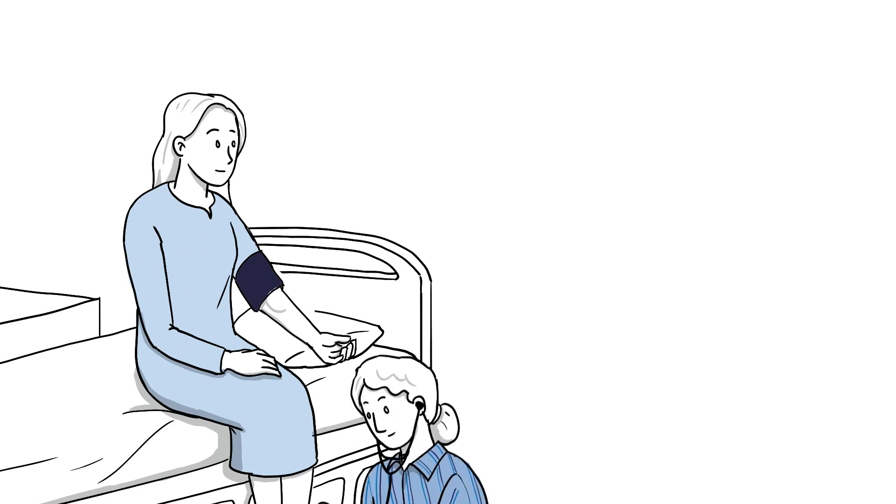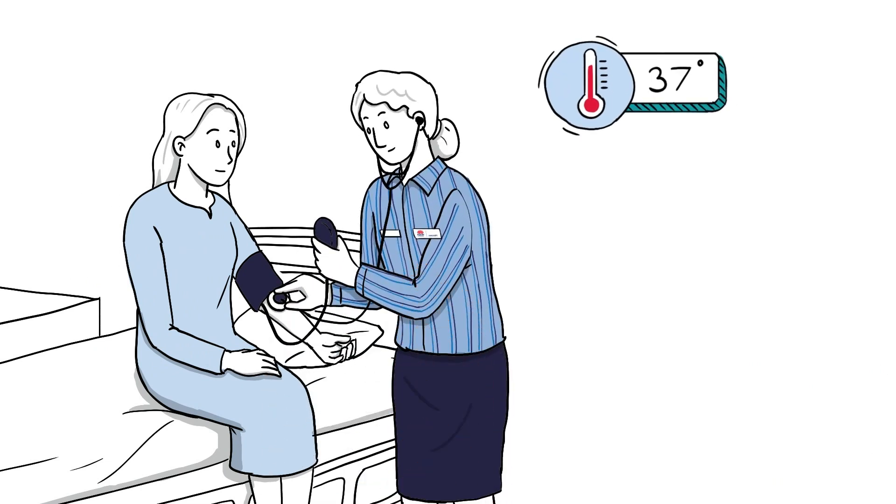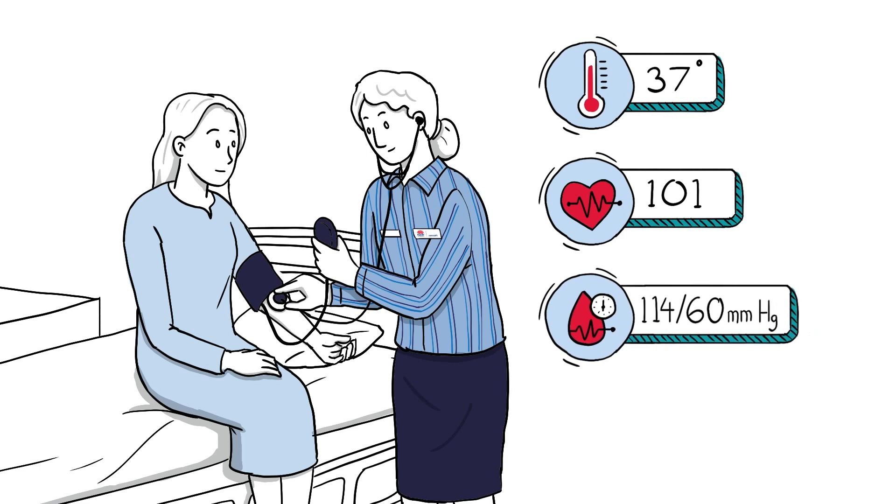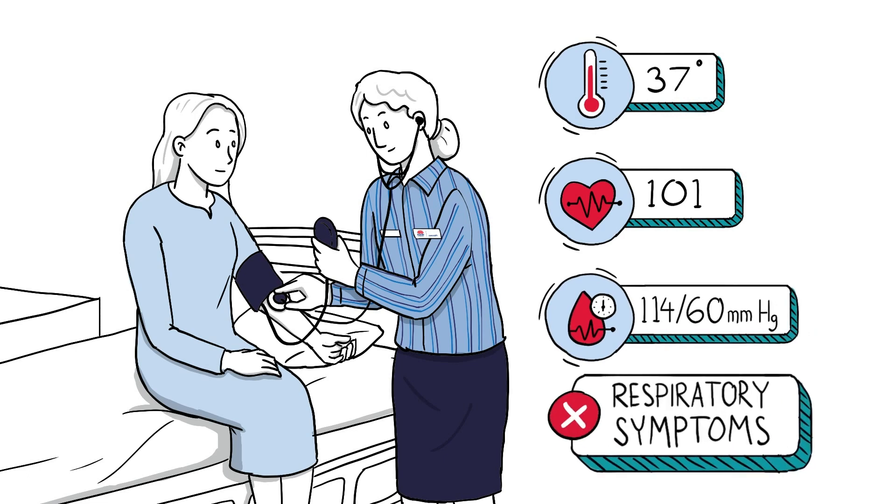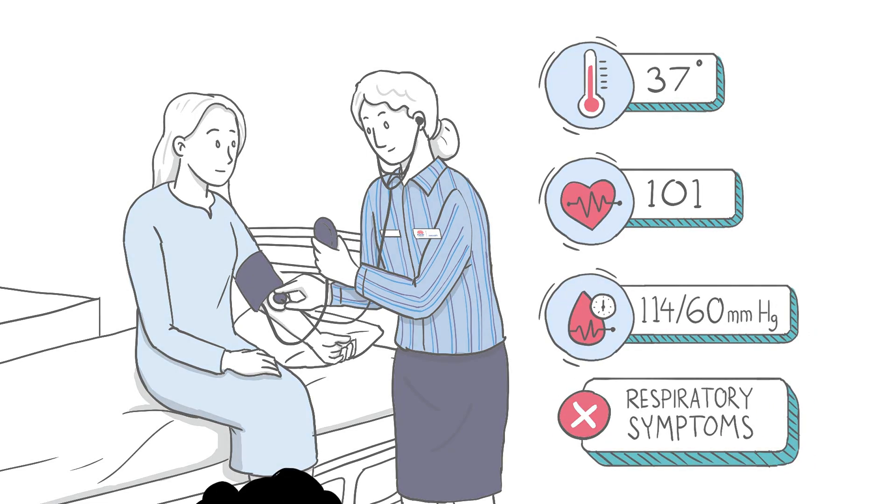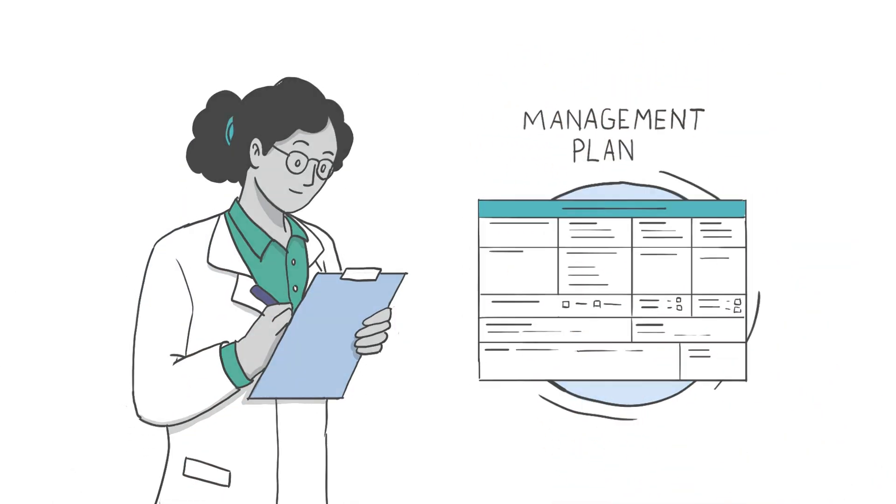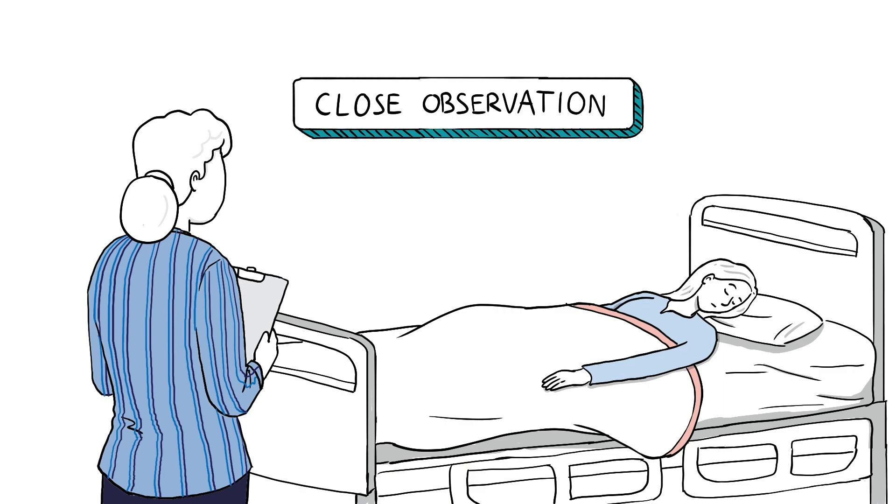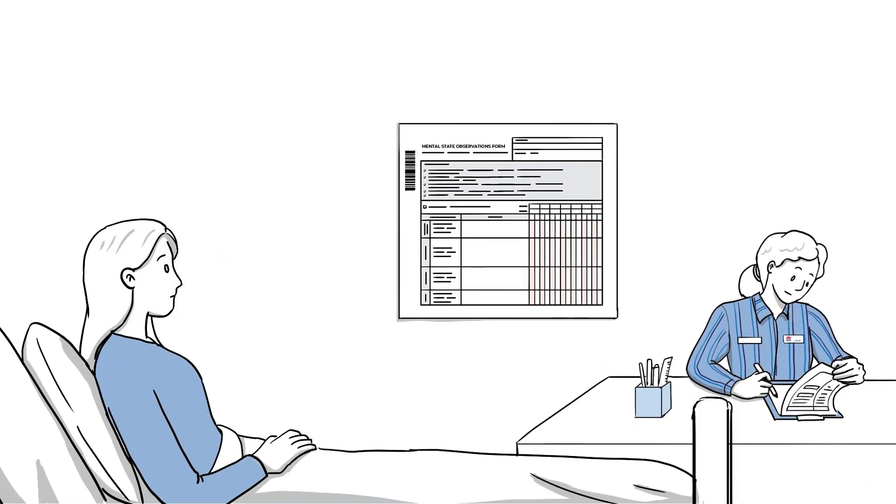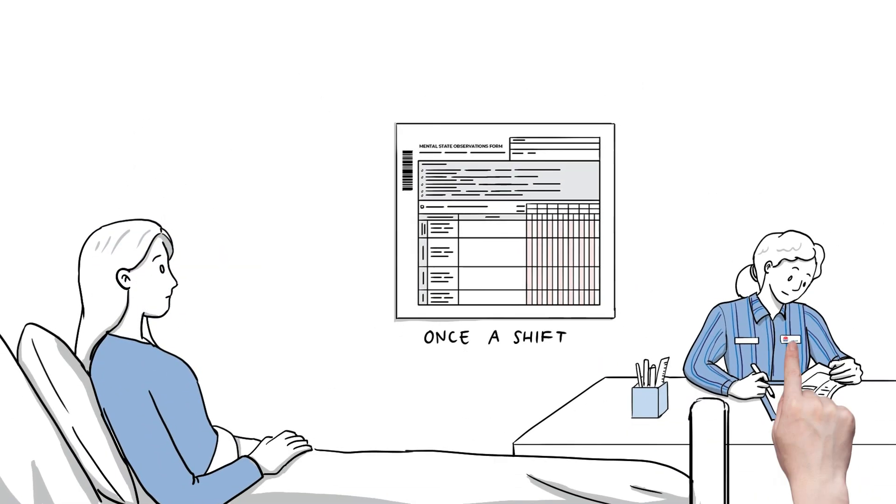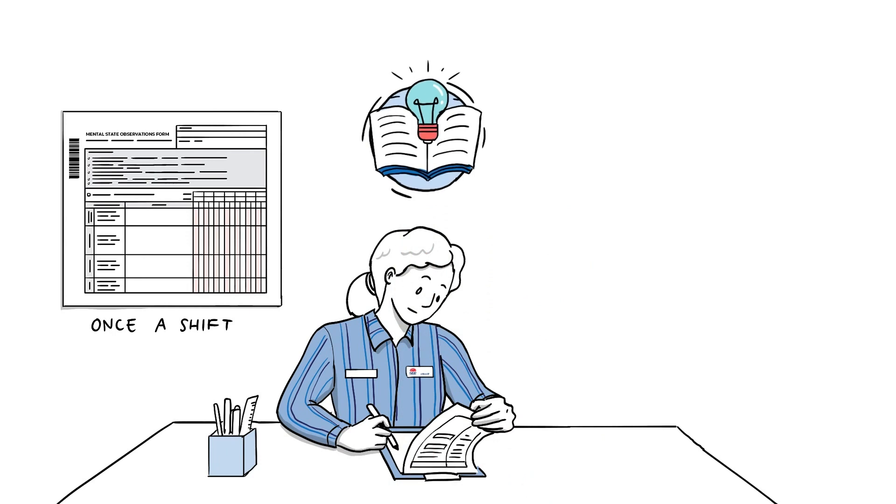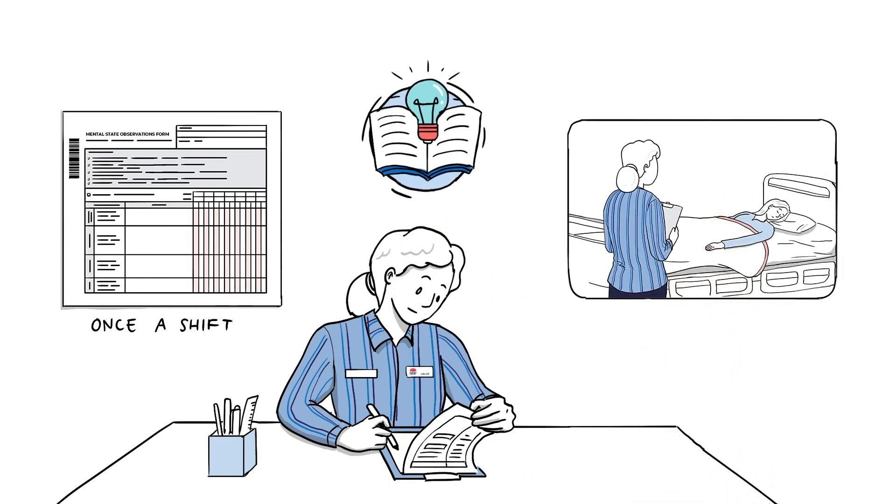A clinical review for Joe reveals a temperature of 37, pulse 101, blood pressure 114 over 60 and no concerning respiratory symptoms. Following the clinical review, the doctor documents a management plan, including for close observation. Nurses complete the mental state observation form once a shift, using their accumulated knowledge and observation of Joe over the course of their shift.